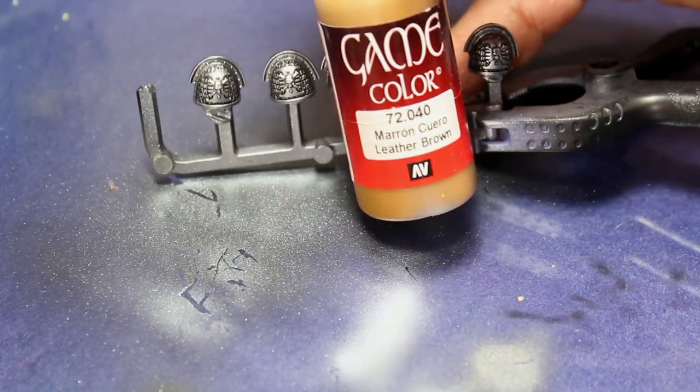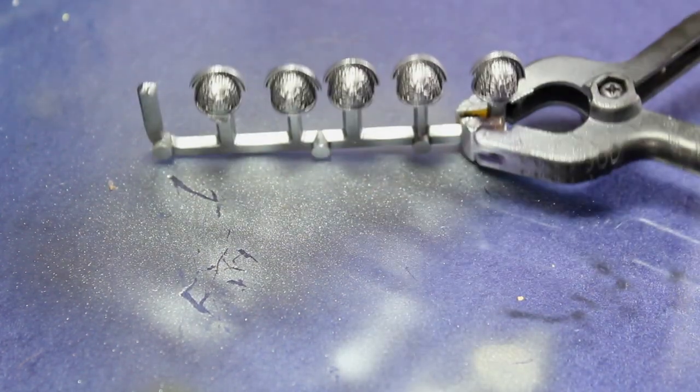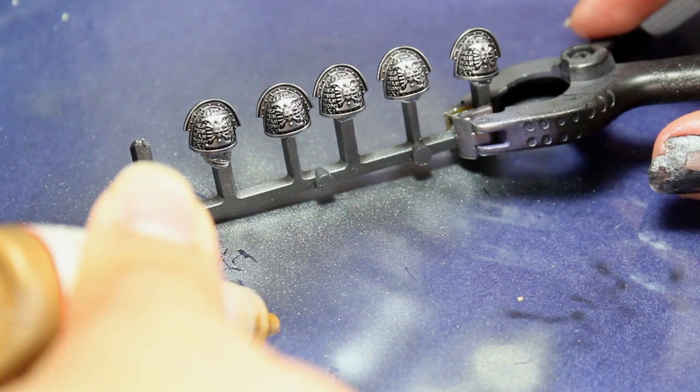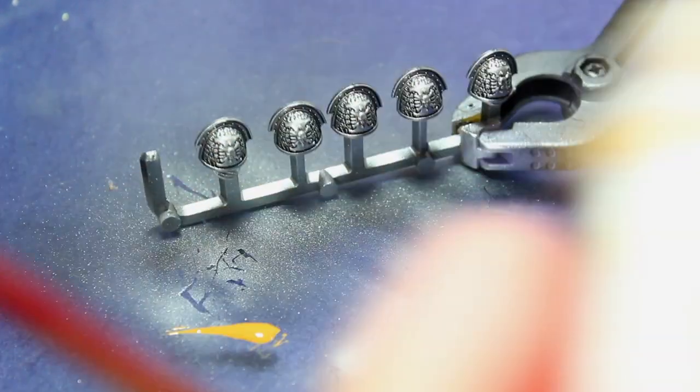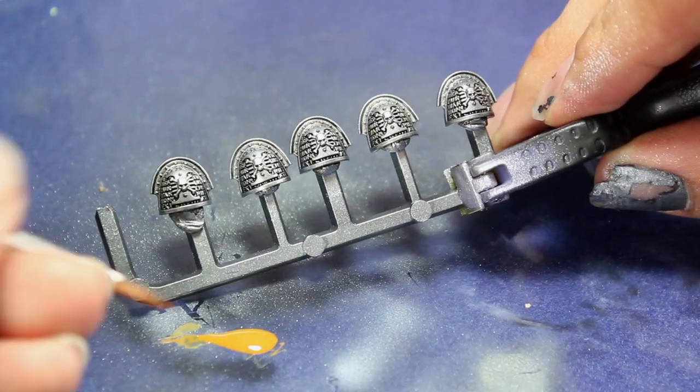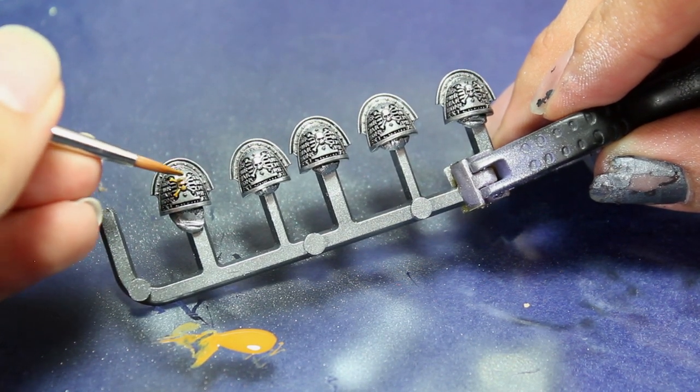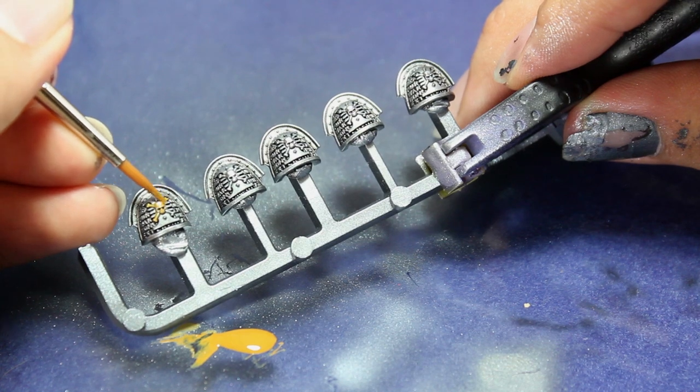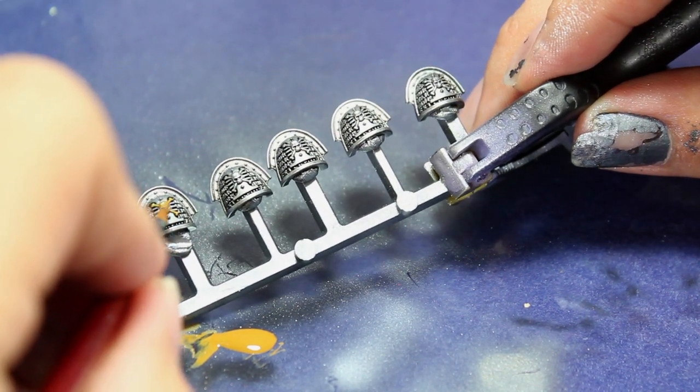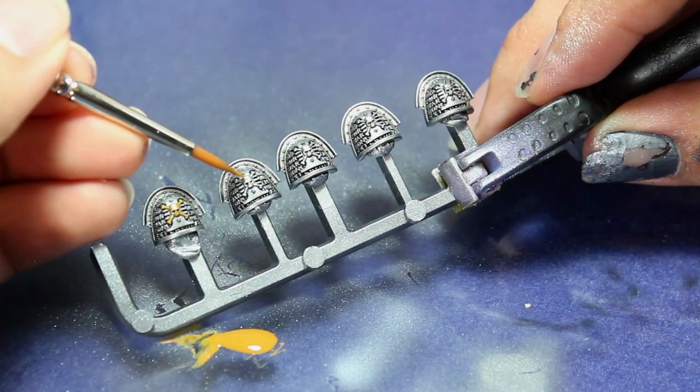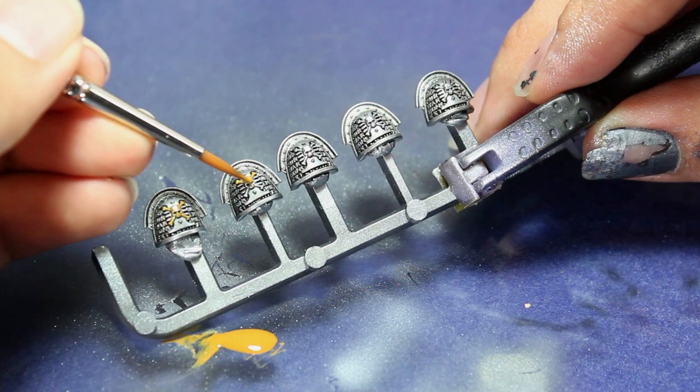Once that wash had dried, I began picking out the skull and crossbones that I'm going to be painting gold. To start out, I'm base coating the skull and crossbones with Vallejo leather brown. This is going to help show up underneath the gold and help me achieve a gold effect in fewer coats. I very carefully picked out the skull and crossbones on each shoulder pad.